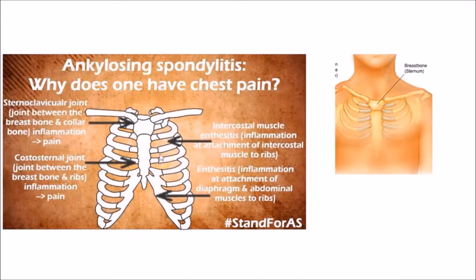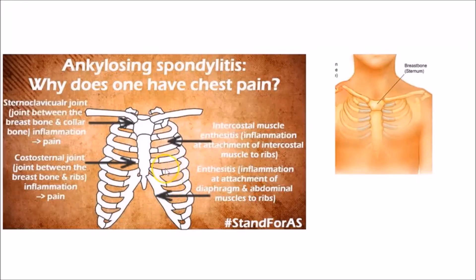There are other areas where there is pain because of Ankylosing Spondylitis due to enthesitis. This includes the ribcage area, where the intercostal muscles attach themselves to the ribs. The place where they get attached to the ribs is inflamed because of enthesitis. So pain would either be in the front of the ribcage, the side, or the back side of the ribcage.